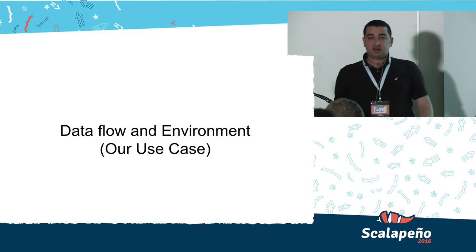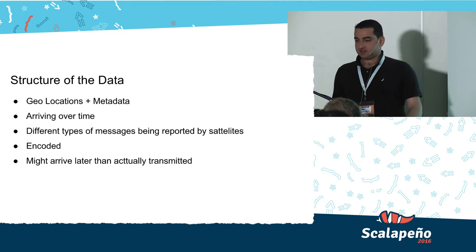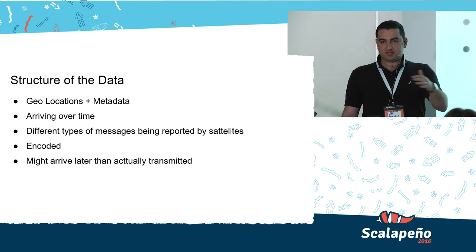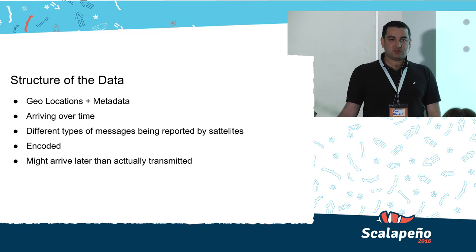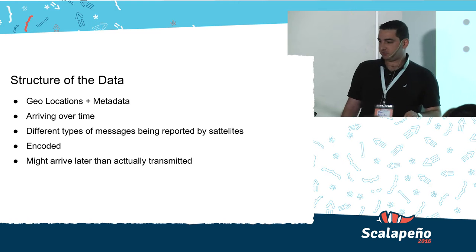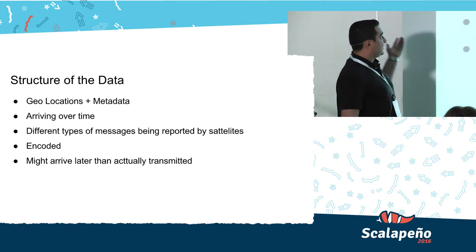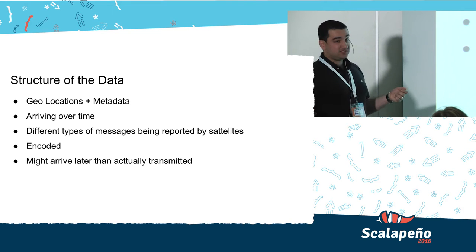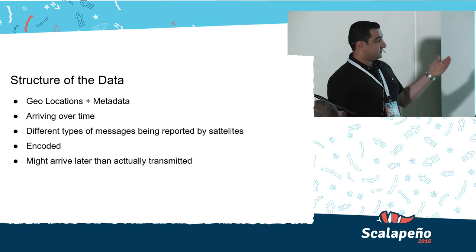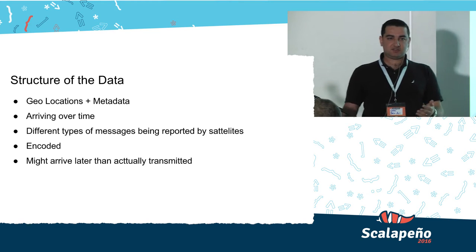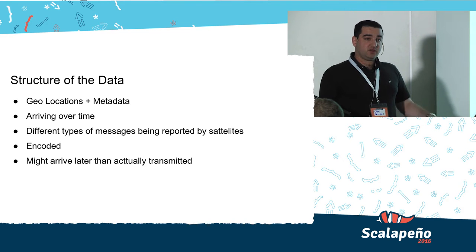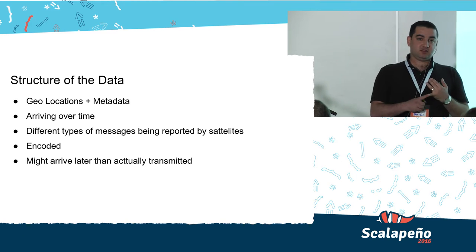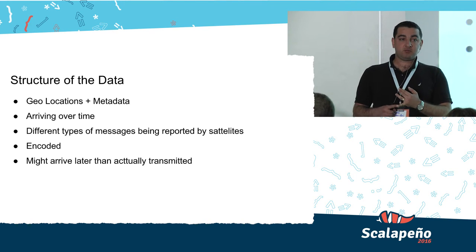Let's talk about the data flow and environment at Windward. Windward is a maritime analytics company — we're doing ships, movement of ships over the world. The data are geolocations with a lot of metadata: a place and location at a certain time, so it's time series data. Different types of messages are reported by satellites — there's a protocol, like HTTP but for ships. The data is encoded, sometimes compressed, and might arrive later than transmitted because of data provider latency or service issues.